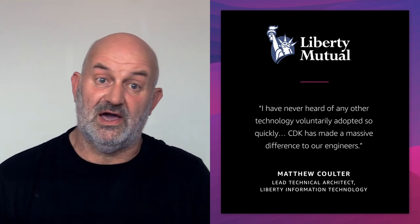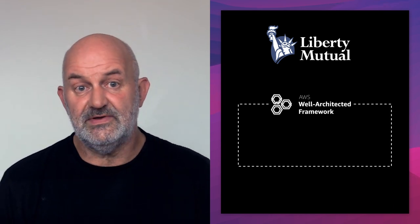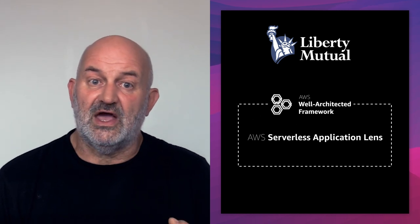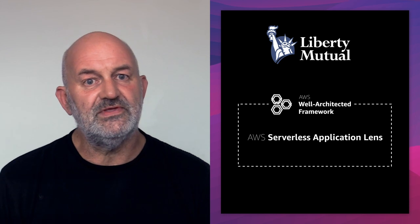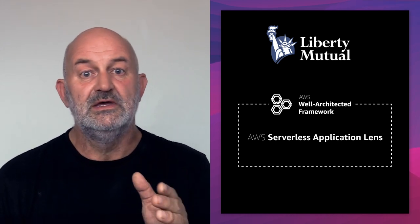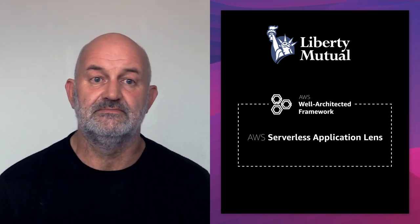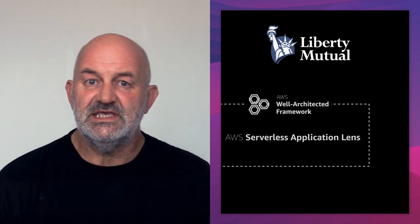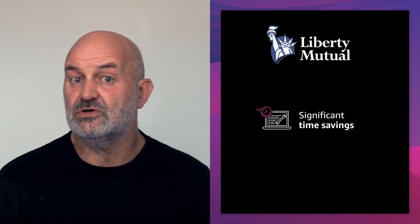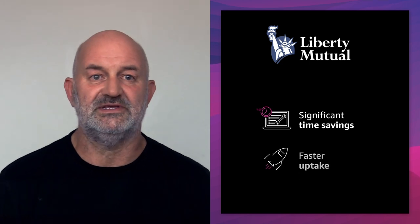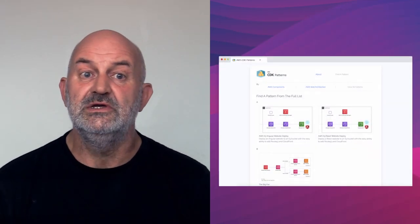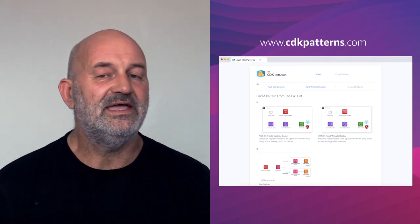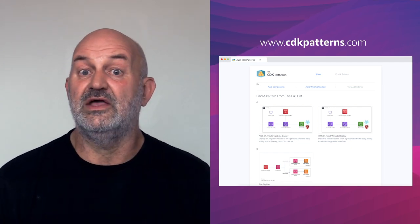Liberty wanted to develop their CDK constructs using proven best practices for financial services before applying their own specific controls to implement capabilities such as compliance requirements with the appropriate guardrails. They decided on the AWS Well-Architected Framework, and specifically the AWS Serverless Application Lens, as the ideal starting point. The serverless lens is part of the well-architected framework and provides guidance targeted at developers. Using the serverless lens saved Liberty significant time on discovering and implementing best practices. Liberty has shared many of these constructs based on best practices at cdkpatterns.com, and I encourage you to leverage these in your own projects and contribute to the library.